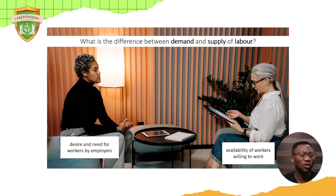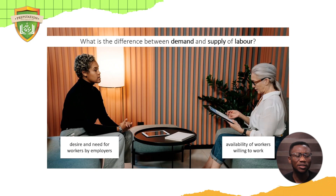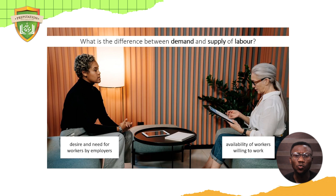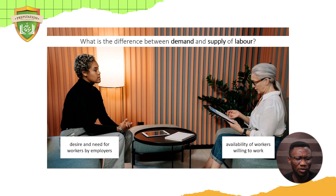Demand for labor is talking about the desire and the need for workers by employers — people want workers, they demand workers. Supply of labor is talking about the availability of workers willing to work. These two combined make up the market for demand and supply of labor. From the picture on your screen, the person conducting the interview is the demand for labor, and the person doing the interview trying to get a job is the supplier of labor.